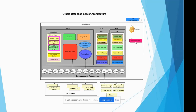The next components we see are the hash area and bitmap merge area. They are similar in that they come into picture for specific kinds of sorting or hash operations. When a query involves some kind of hash operation, these two memory components inside the PGA come into play — that is, the hash area and the bitmap merge area. These are the main components inside the PGA.